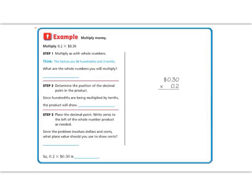Great job so far, 5th graders. Let's continue on with the example. In this example, we are multiplying money. We are multiplying 0.2 times 30 cents.